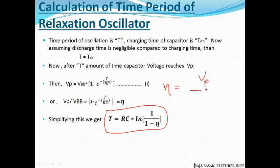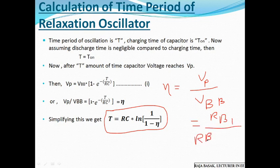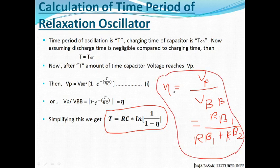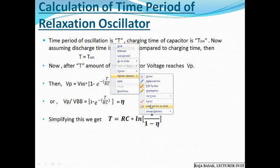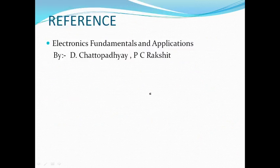The intrinsic standoff ratio η equals Rb1 divided by (Rb1 plus Rb2), which is used in the equivalent circuit. Using this, we can calculate the time period of the relaxation oscillator. This is the reference formula for UJT relaxation oscillator time period calculation.